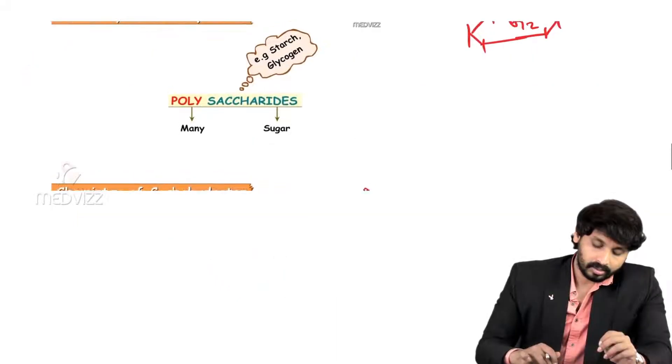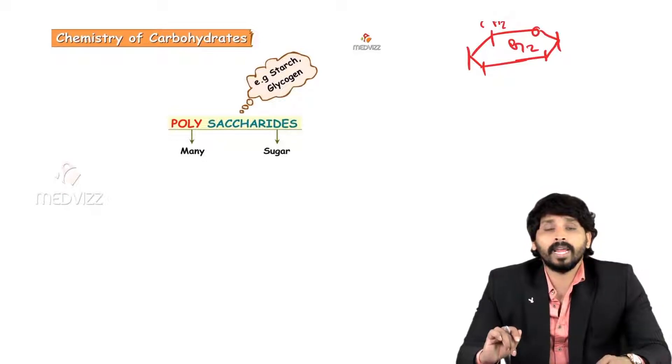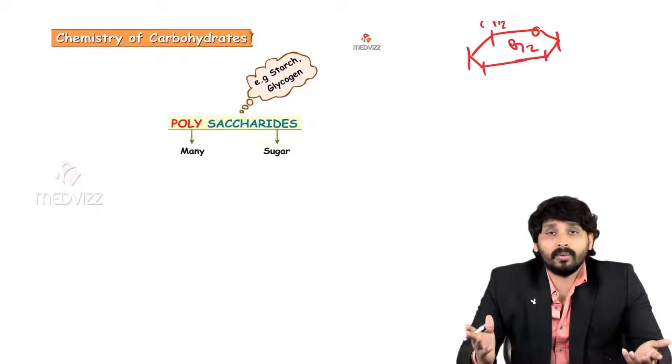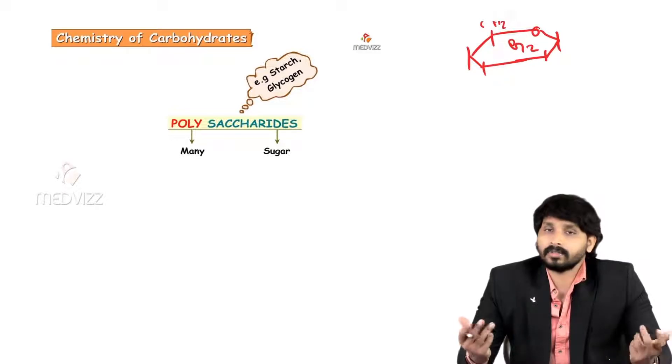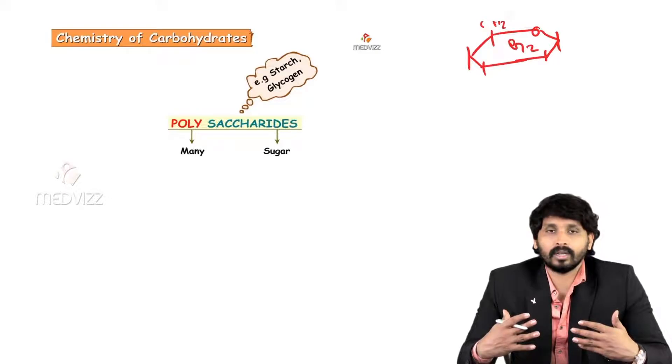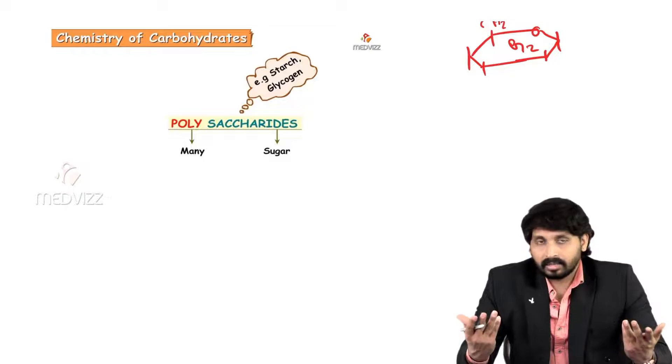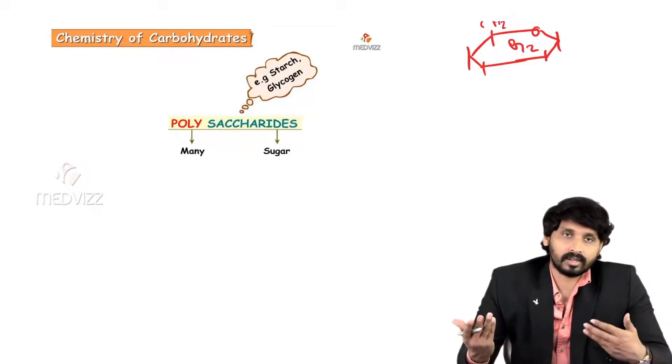Other form of carbohydrates to discuss are polysaccharides. The main polysaccharides we are aware of are starch and glycogen. Poly means many, saccharides mean sugars. Many sugars clubbed together or joined together to form a single polysaccharide. Two types of classification: homopolysaccharides and heteropolysaccharides.